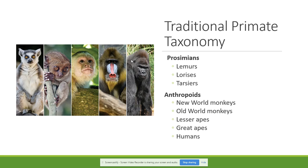Let's return to the traditional primate taxonomy. It is good to know about both systems because different textbooks use either one. For example, the book we are using now emphasizes the division between strepsirrhines and haplorhines, but in another textbook I use at other colleges, the traditional taxonomy is used. In the traditional taxonomy, the tarsiers are placed under the prosimians, because tarsiers have many characteristics of prosimians but also characteristics of anthropoids.